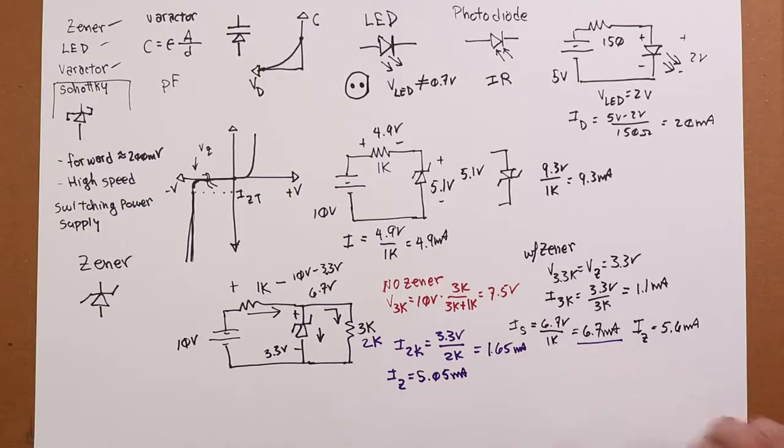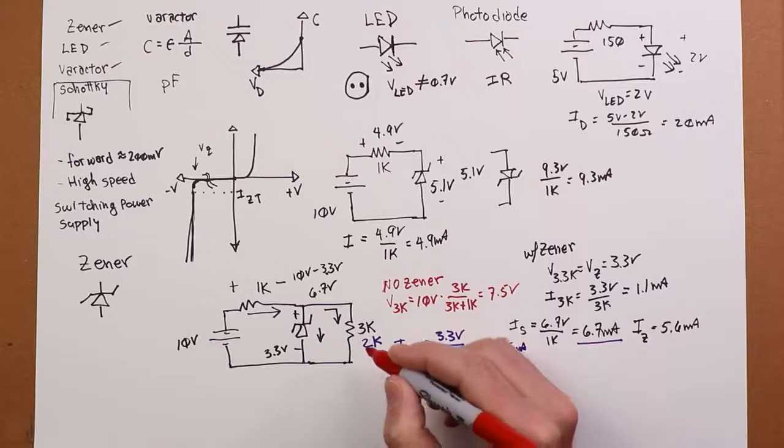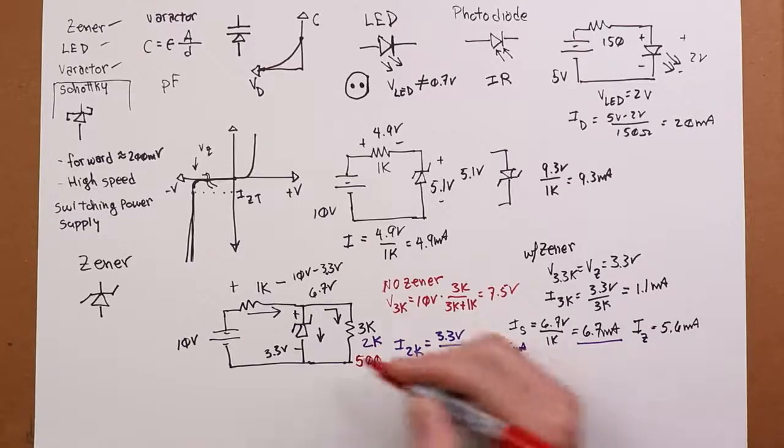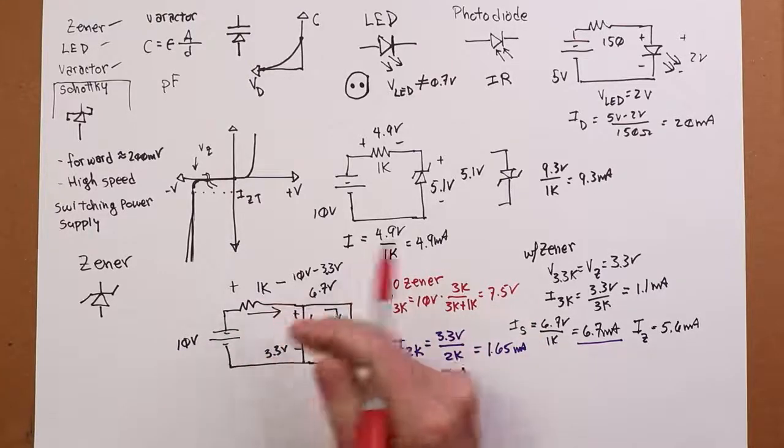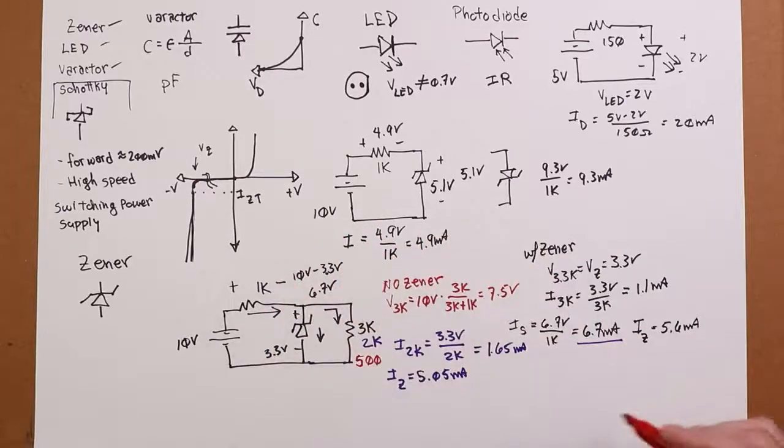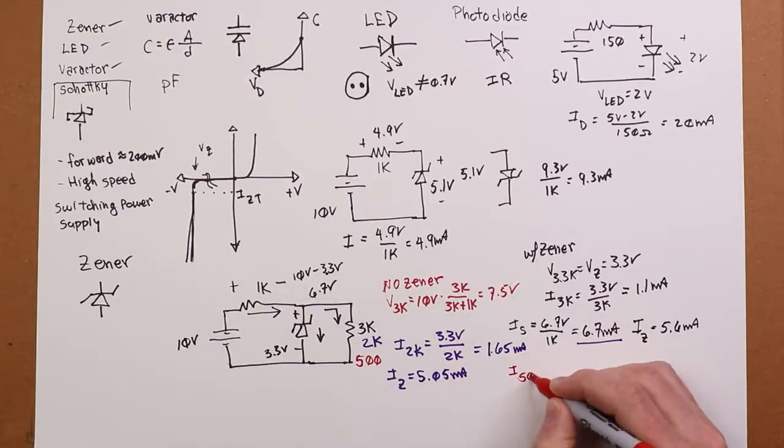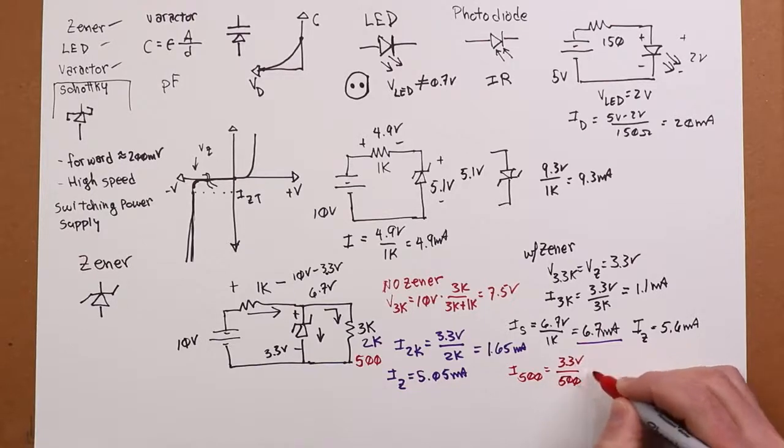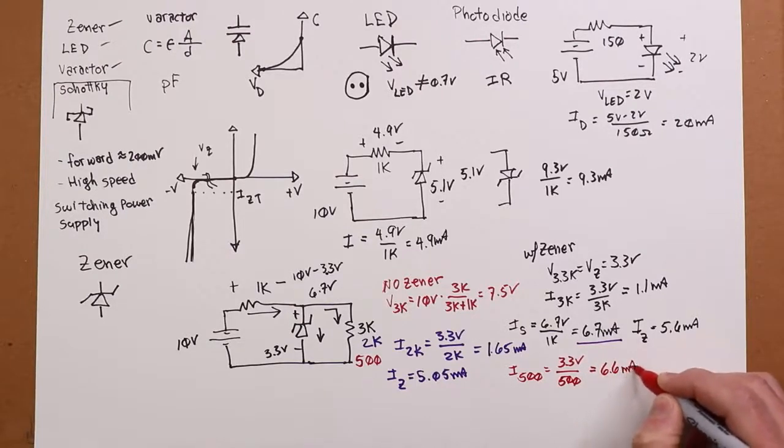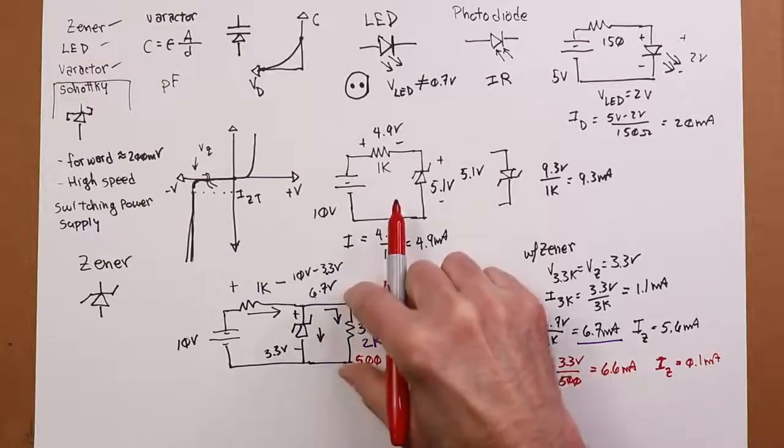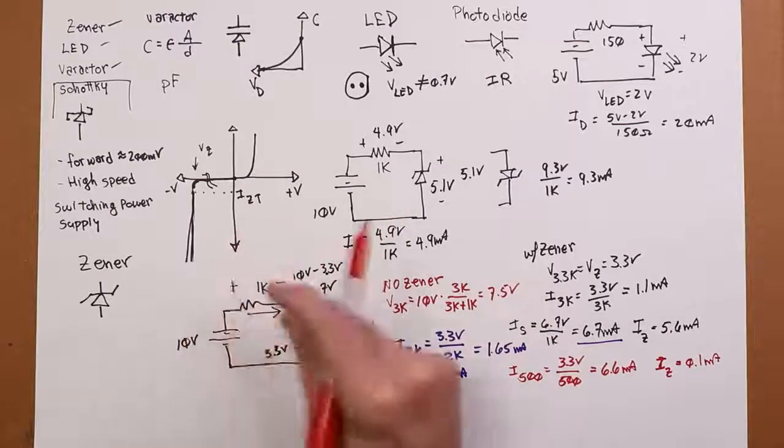Well, what if we change it again? What if I go from the 3 to the 2 to maybe 500 ohms? Well, 1k 500, this should get a third if there was no Zener. That's 3.333, which is just a smidge more than this. So Zener's still going to be on. And the current through the 500 is going to be 3.3 volts over 500 ohms. And that's going to get a 6.6 mils, which means that the current through the Zener is now just a tenth of a mil.